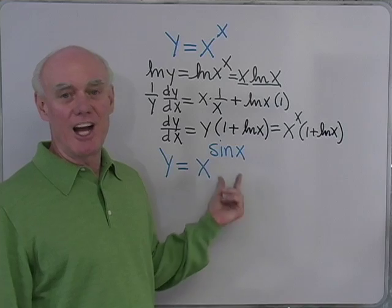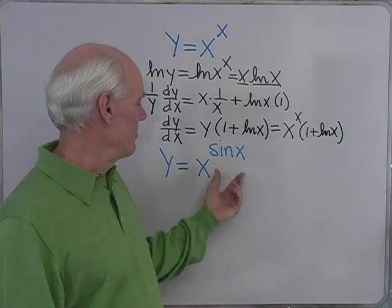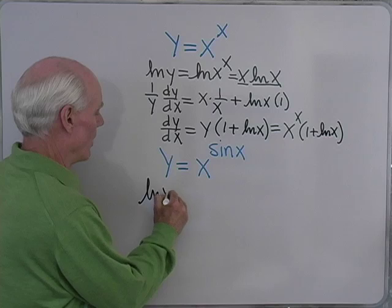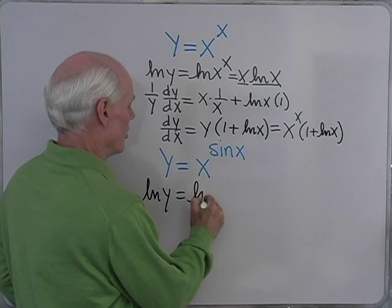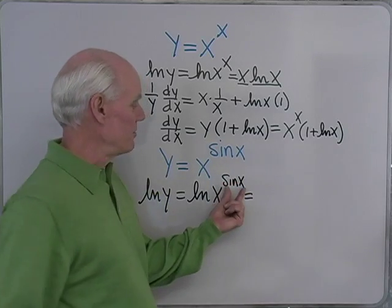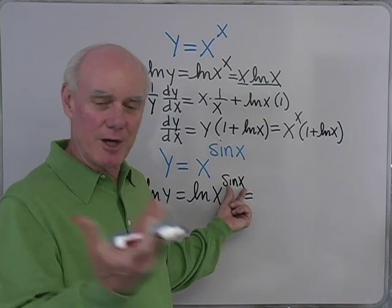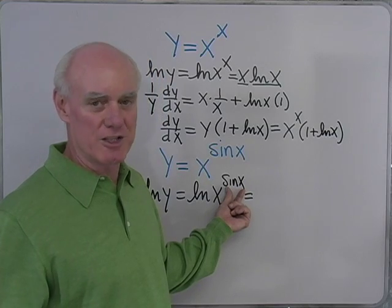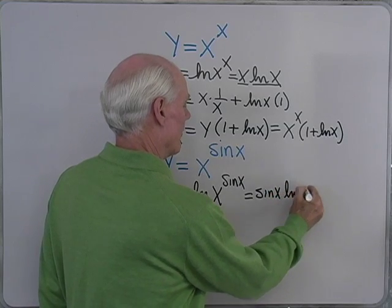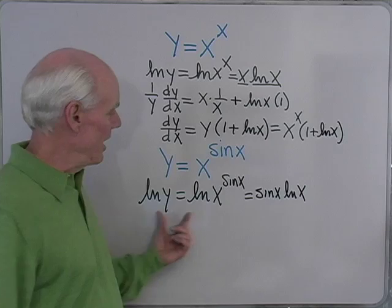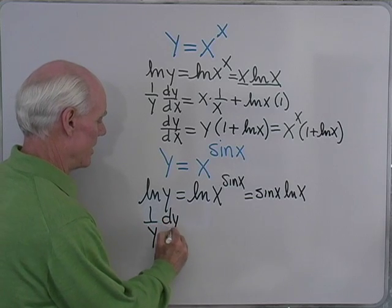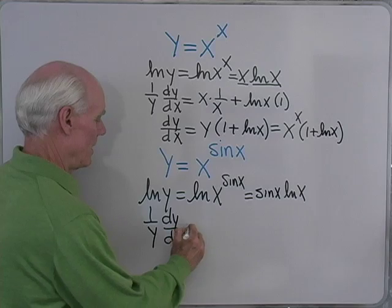How about y equal x to the sine x? Same kind of situation — my exponent here contains the variable, so I'll have to take the log of both sides. Natural log of y is natural log of x raised to the sine x. Now that exponent — it doesn't matter what it is — my properties of logarithms tell me I can rewrite this expression with this exponent as a coefficient. So that's going to be sine x times the log of x. Now I'll differentiate using implicit differentiation: 1 over y, dy/dx, is equal to —